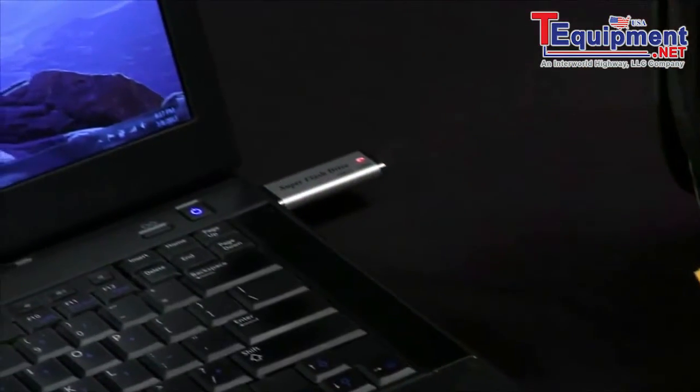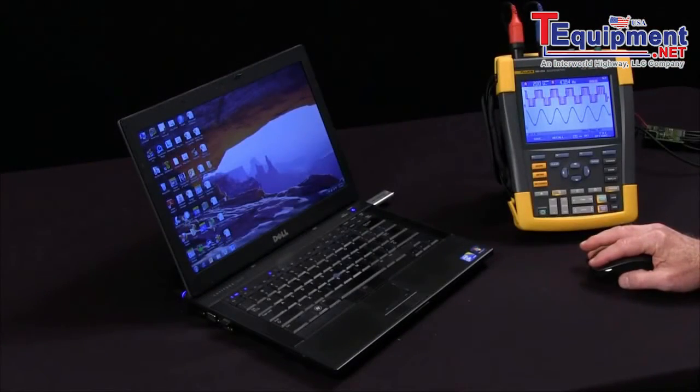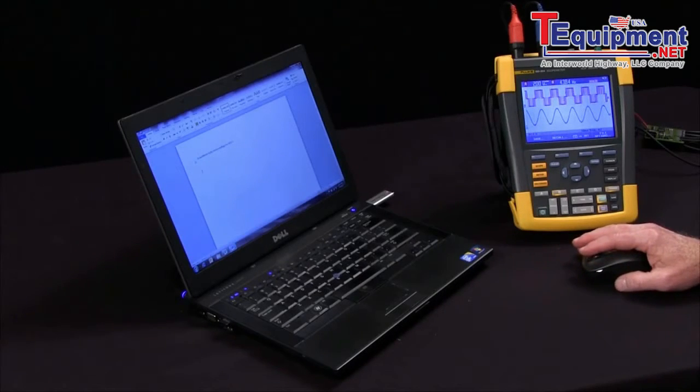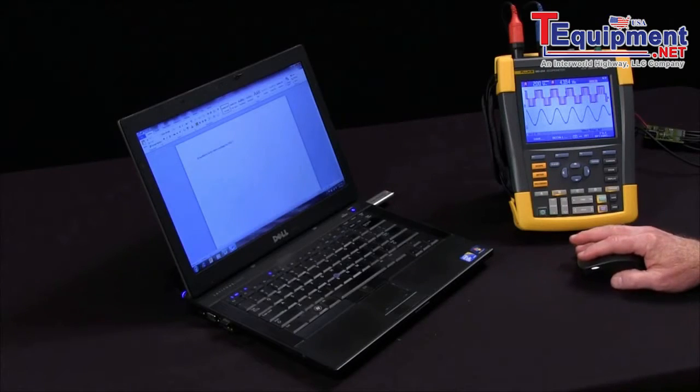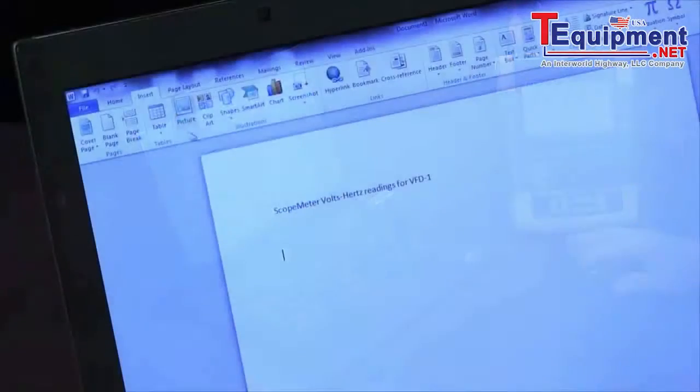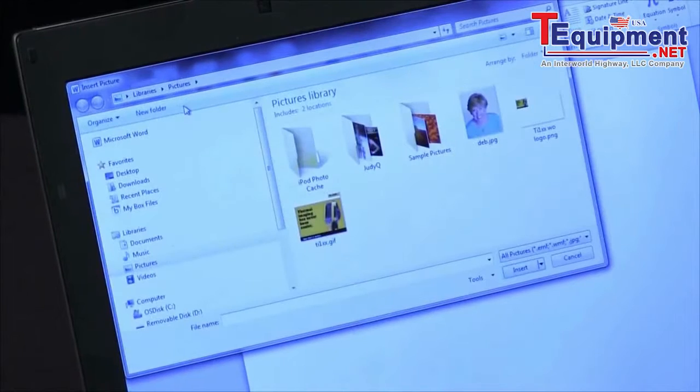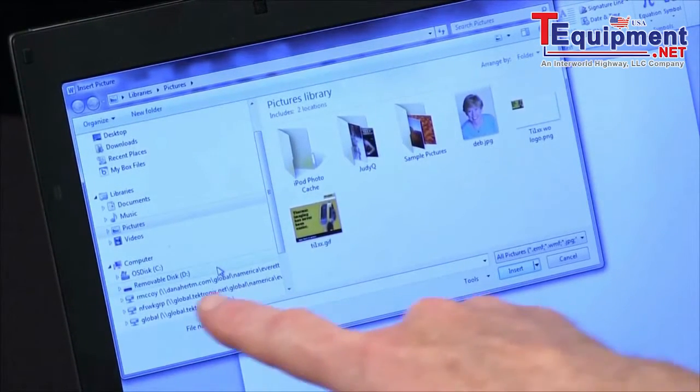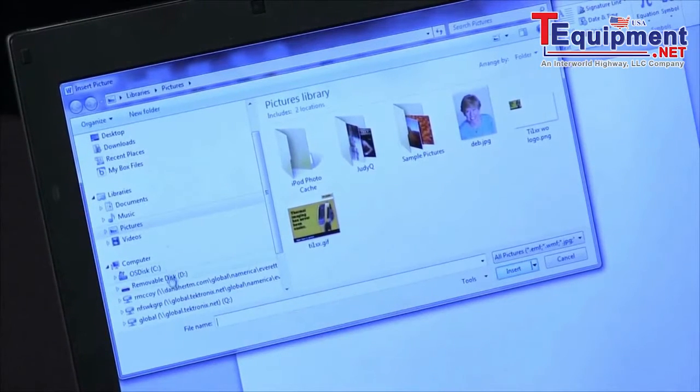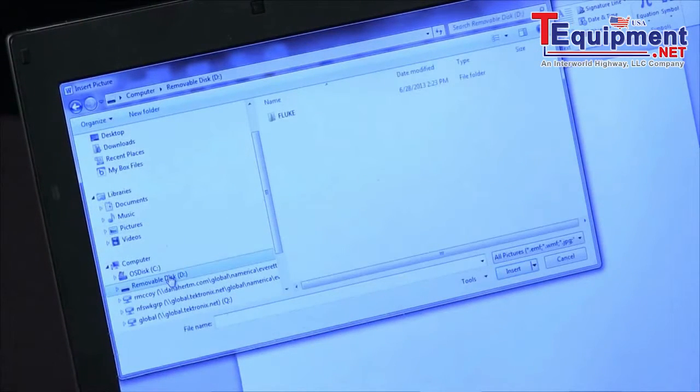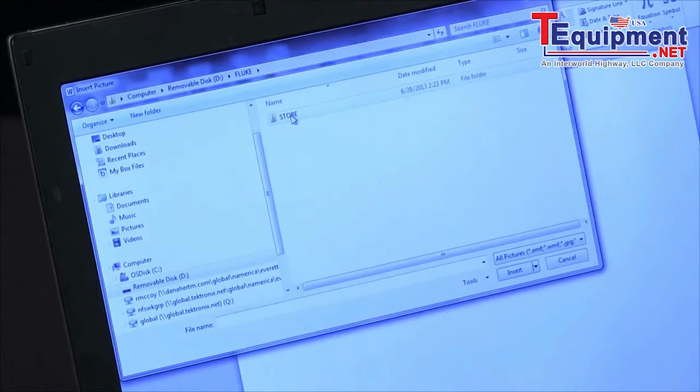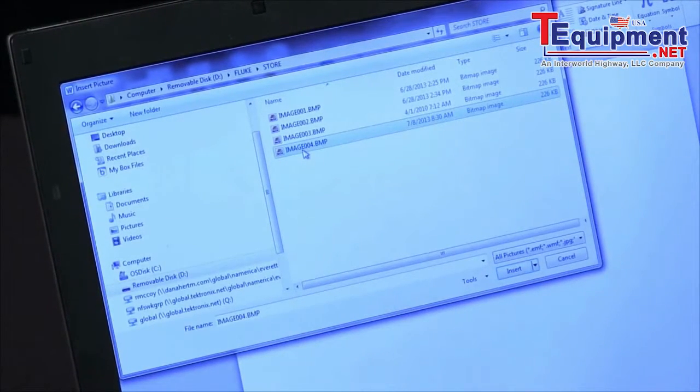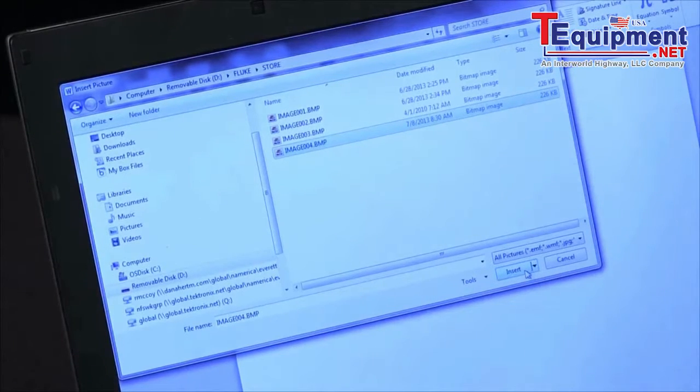Come into Word. I can have a report template already opened up, and say we want to import a picture, come down to my removable disk, go to the Fluke folder, and I can pull that bitmap image and say Insert.